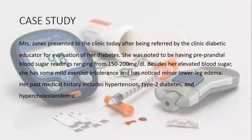Now we have a case study. Mrs. Jones was presented to the clinic after being referred by a diabetic educator for evaluation of her diabetes. She was noted to have a pre-prandial blood sugar ranging from 150 to 200 mg/dL. Pre-prandial blood sugar is the fasting sugar before a meal; for a normal person it should be between 110 to 120. Since it is showing 150 to 200, this clearly indicates she is a patient of diabetes.